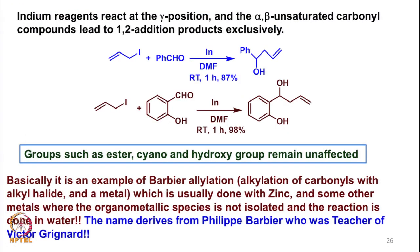This is the advantage of using indium-based reactions. Indium reagents react at the gamma position. Here you have alpha, beta, and gamma positions. The reaction occurs at the gamma position and can react with an aldehyde in the presence of DMF — it is only one hour, the reaction is very fast. You can also carry out such reactions in aqueous medium. The corresponding homoallyl alcohol is obtained, since it is an allylic substrate that is being used. The yields are fairly high.